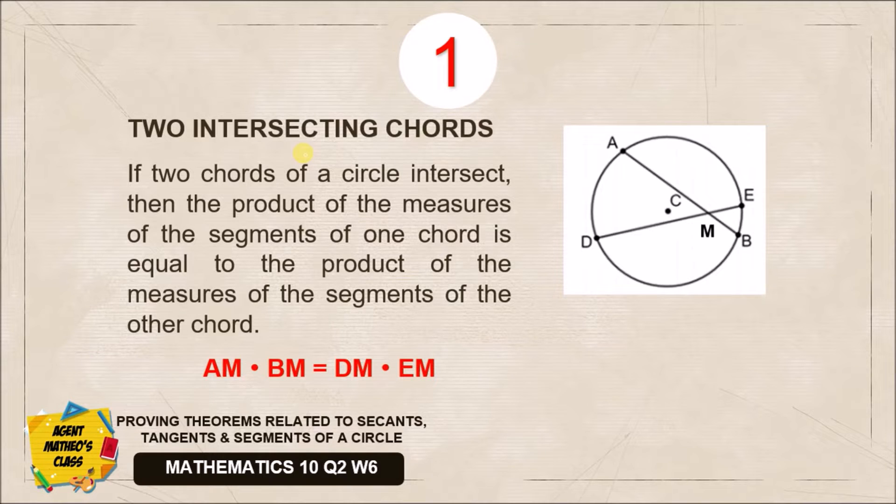Using this equation and applying this figure, we'll prove that the product of the segments per chord is equal to the product of the segments of the other chord. How will we prove that the product AM·BM equals DM·EM? Look at the drawing - this is AM, this is BM, and this equals DM times EM.